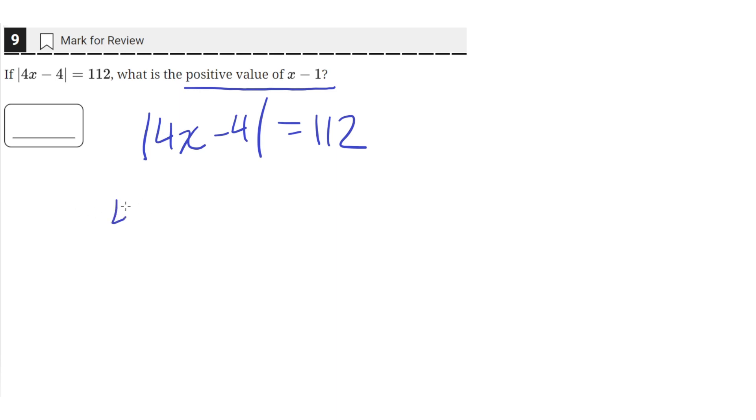So when we factor out a 4, we're left with x minus 1 on the inside, and that equals 112.